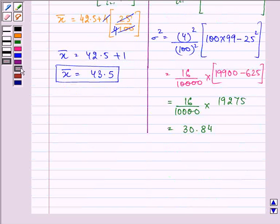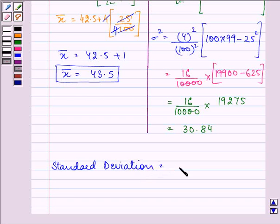Now, to find out the standard deviation, we need to find out the square root of variance. So the answer, that is under the root 30.84, that is equal to 5.55.